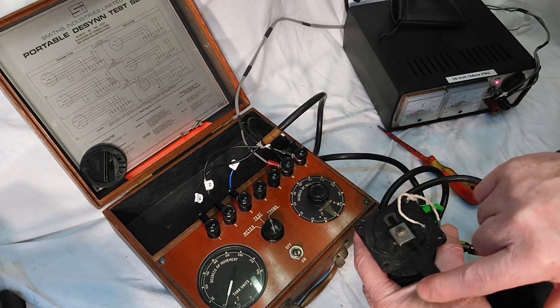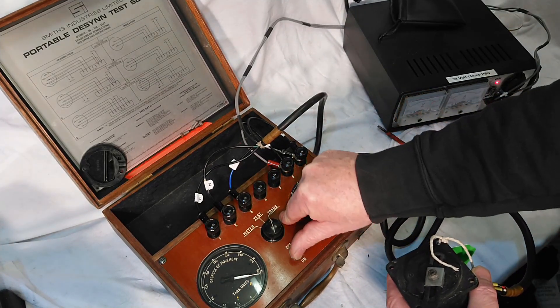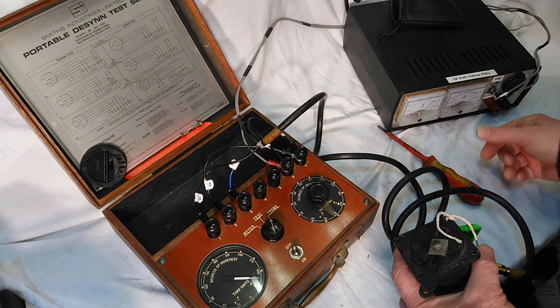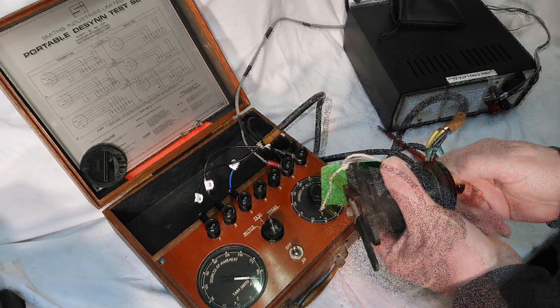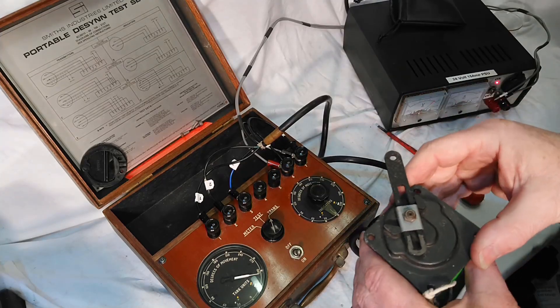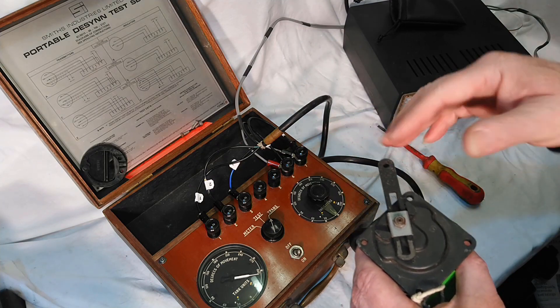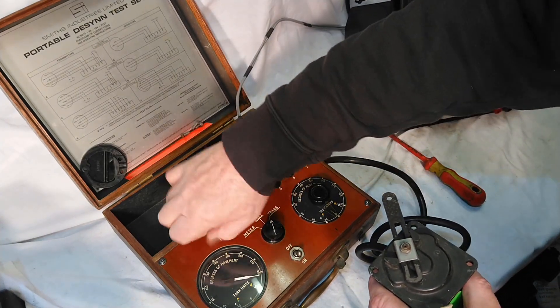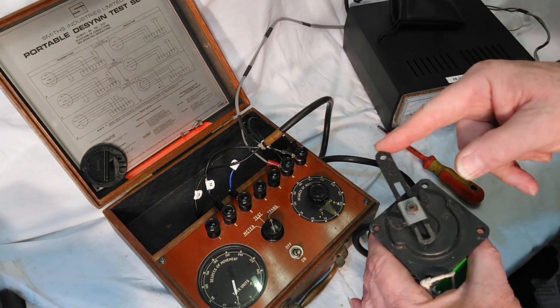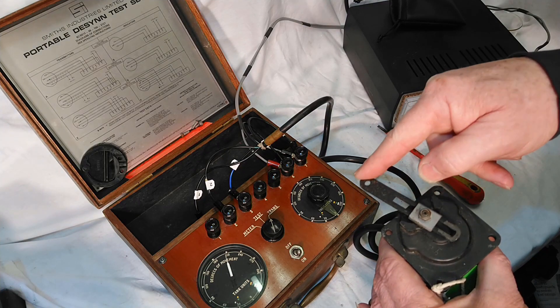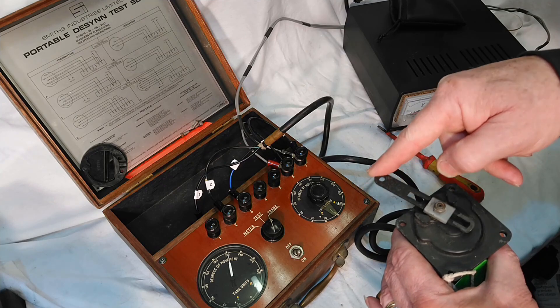So we'll turn that off, turn that off, and we can unscrew that then. We'll put the back on it. Okay, so I'm going to simulate a couple of faults. As you can see, we've got a nice smooth movement there, but if we lose a line, if a line goes open circuit, you can see what the problem is straight away. Bump. And that's what you tend to get if a line goes open circuit.